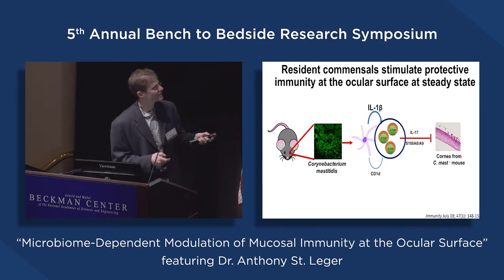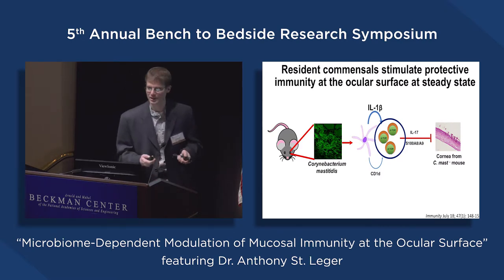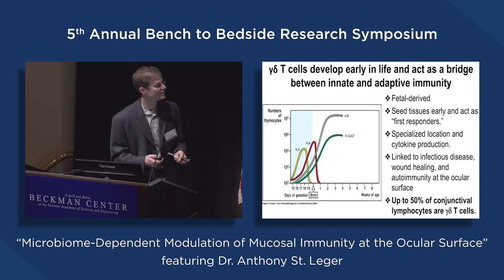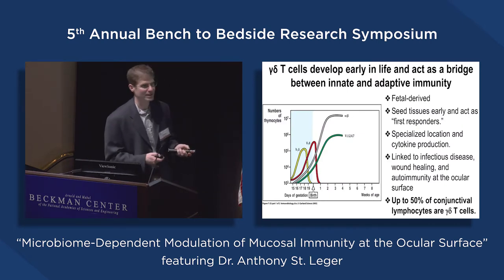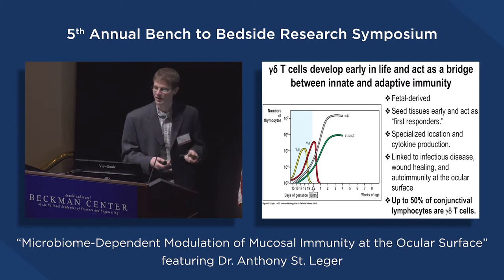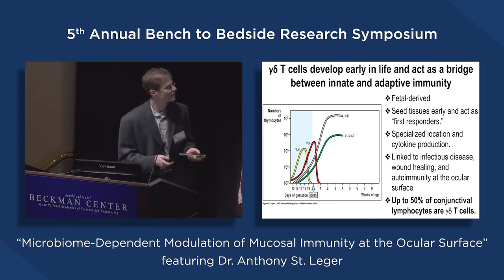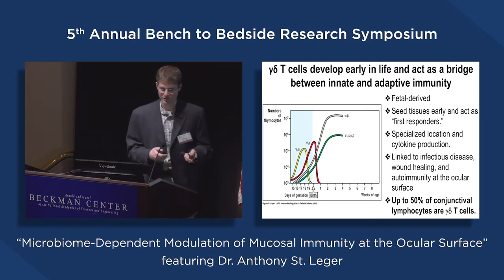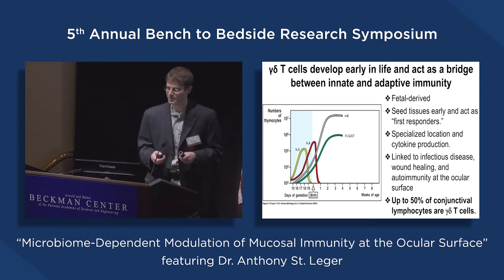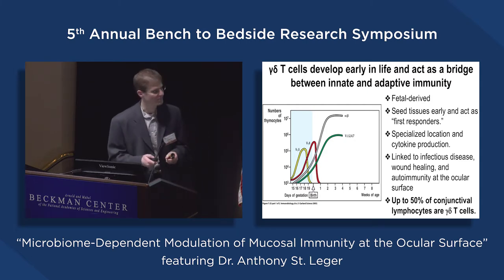What we found was that antigen-presenting cells in the tissue stimulate gamma delta T cells to protect the ocular surface. My lab is very interested in these gamma delta T cells. Unlike conventional alpha beta T cells that develop after birth, gamma delta T cells are fetal-derived and seed barrier tissues like the conjunctiva very early — before and after birth. Up to 50% of conjunctival lymphocytes are actually gamma delta T cells in both humans and mice. Gamma delta T cells are linked to infectious disease, wound healing, and autoimmunity at the ocular surface — in certain situations they can be beneficial or pathogenic.